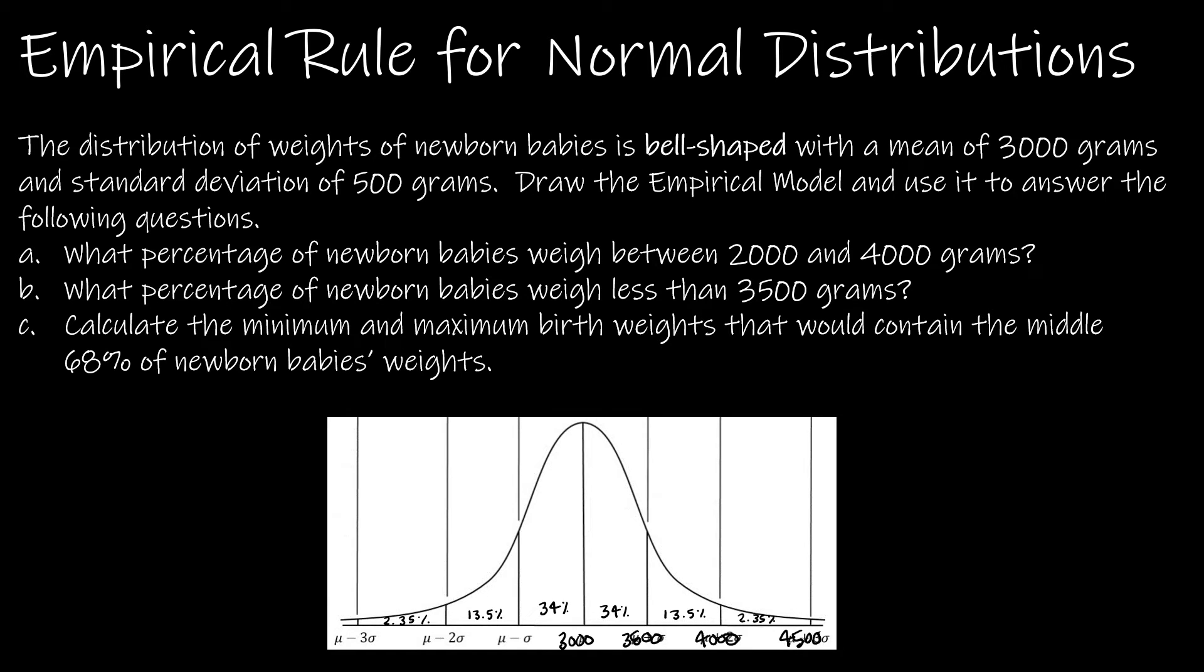And then to the left of 3000, I'm subtracting. So minus 500 gives me 2500 and then 2000 and then 1500. So if they just wanted me to draw the empirical model, I am done. Now they want me to use that information to answer some questions.